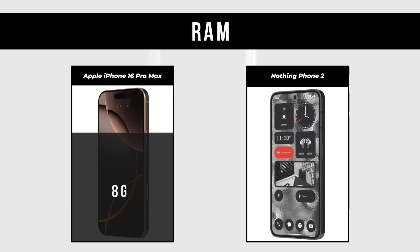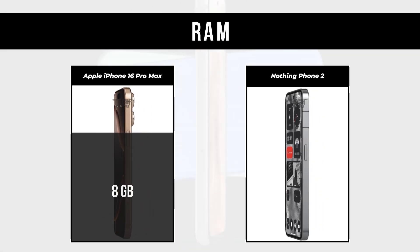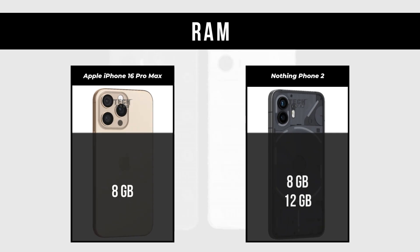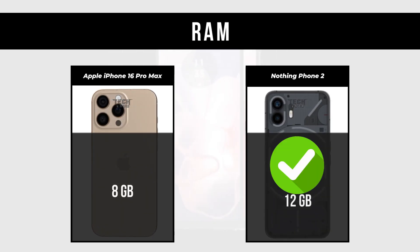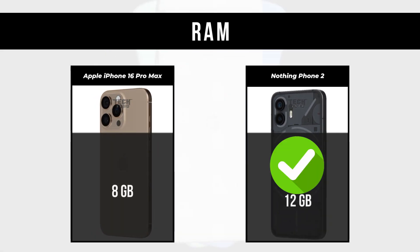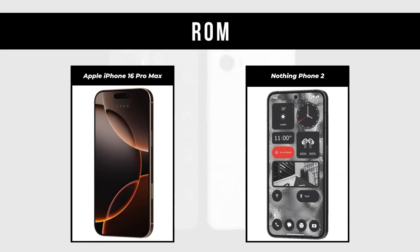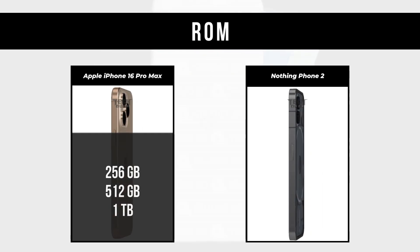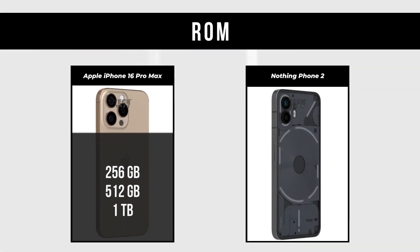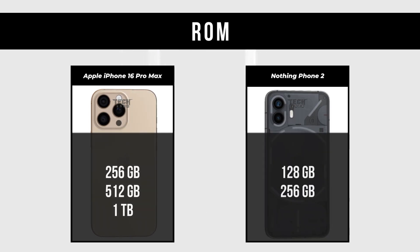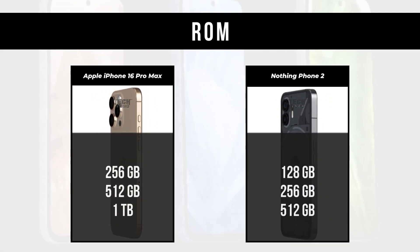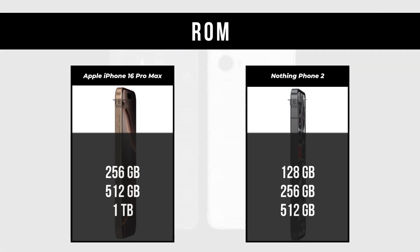RAM: Apple iPhone 16 Pro Max is 8GB; Nothing Phone 2 is 8GB and 12GB. Storage (ROM): Apple iPhone 16 Pro Max is 256GB, 512GB, and 1TB; Nothing Phone 2 is 128GB, 256GB, and 512GB.